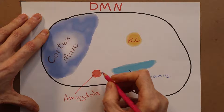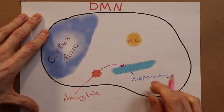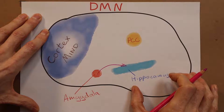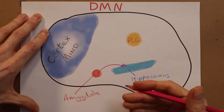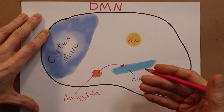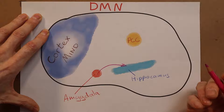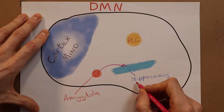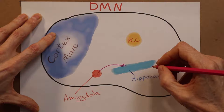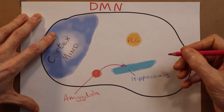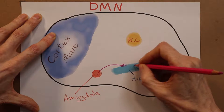Once triggered, the amygdala consults the hippocampus. The hippocampus is like the memory banks of the brain. It asks the hippocampus if it has any additional memories and related experiences connected to what the amygdala thinks it's detecting. Unfortunately, in the anxious brain the hippocampus is very likely to have all sorts of memories of past traumas, including previous experiences of anxiety, that will be added to this feeling.